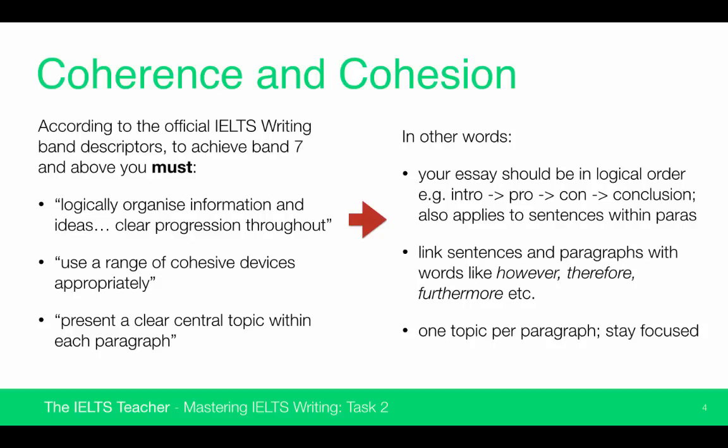You need to link sentences and paragraphs with words like: however, therefore, furthermore, as a result, despite this, on top of that. These are called cohesive devices — they help to link ideas in sentences and between sentences together. Finally, one topic per paragraph. Stay focused on your topic and try not to include too many different ideas within a paragraph. Ideally, keep to one idea and just develop it to the point where it's a really well-argued idea.